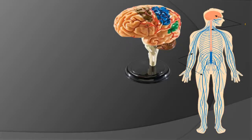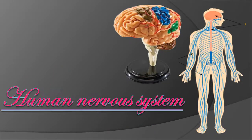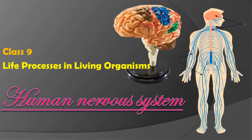Welcome everyone. Today's topic is about the human nervous system for Class 9, from the lesson 'Life Processes in Living Organisms.' We have already completed different parts from this lesson.